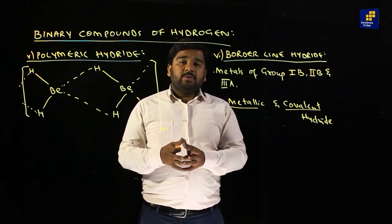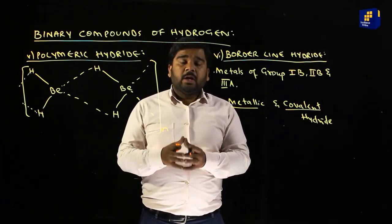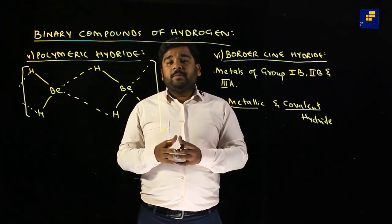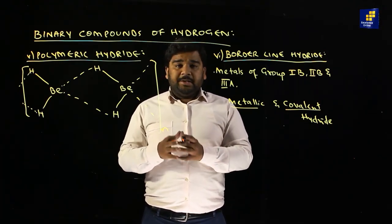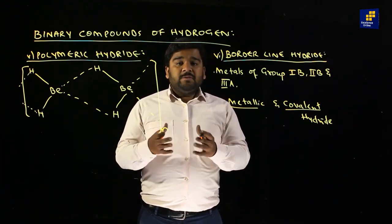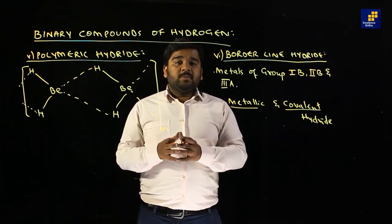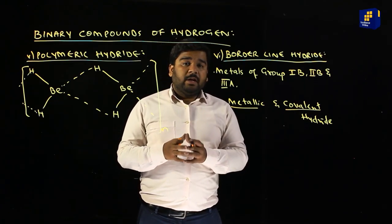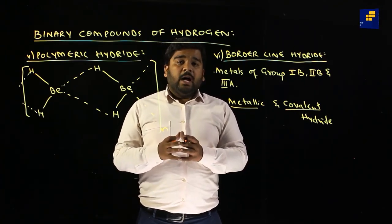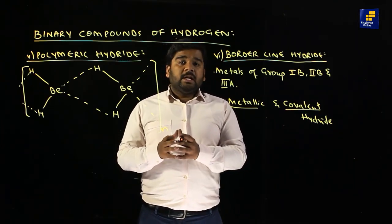यहाँ तक chapter number 2 complete हुआ — जिसमें main topics थे: binary compounds of hydrogen, atomic hydrogen, industrial preparation of hydrogen, और isotopes of hydrogen। Position of hydrogen पर भी detail गुफ्तगू पिछली video lecture में की थी। Next video lecture में chapter के last में दी गئی assignment की chemical equations solve करेंगे और उसी दिन online test भी बताया जाएगा।